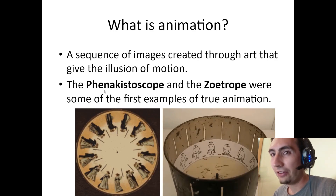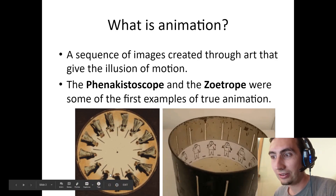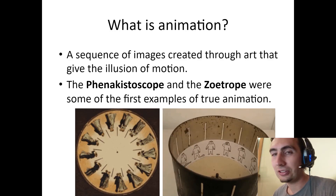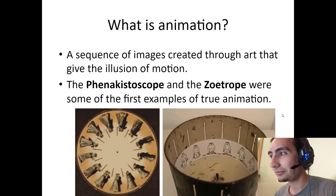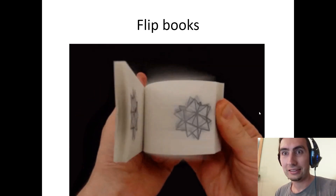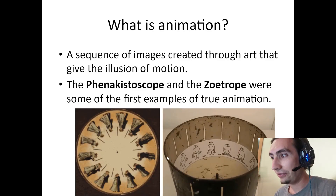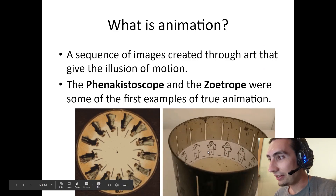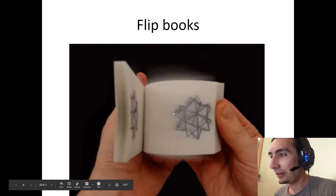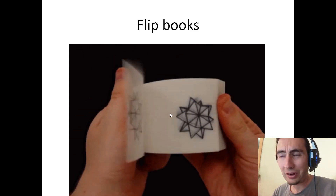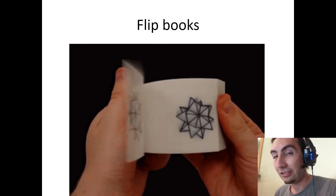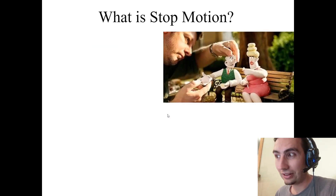Some of the first types of animation ever made were the phenakistoscope — the circle on the left — and the zoetrope. They were some of the very first, most basic kinds of animation ever made. Same with flipbooks — they also have just a series of images. They're not actually moving; it's a spinning wheel. With a flipbook, each little picture is slightly different, and if you flip through the pages real quick it looks like it's moving — it gives the illusion of motion.